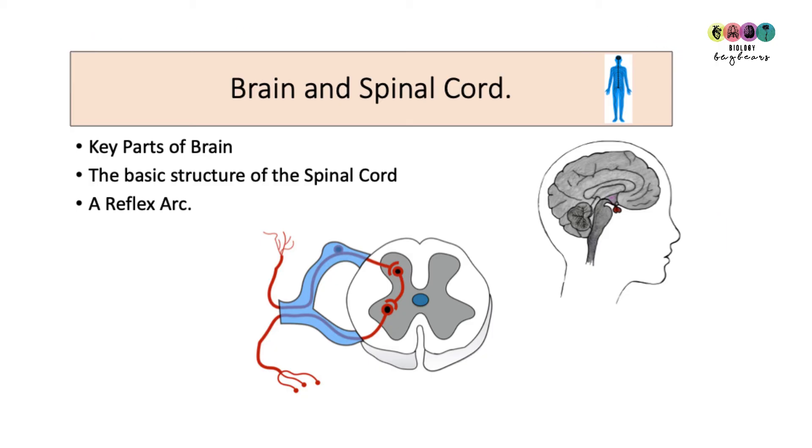At the end of this video you should be able to identify key parts of the brain from a diagram, label them and state what they do. Just be mindful that diagrams of the brain vary greatly so look some up on YouTube or on Google. As well as that you should be able to draw a good labeled diagram of the spinal cord and outline what happens in a reflex arc.